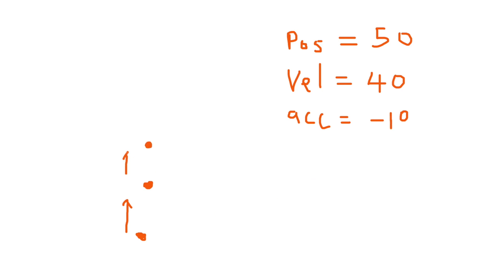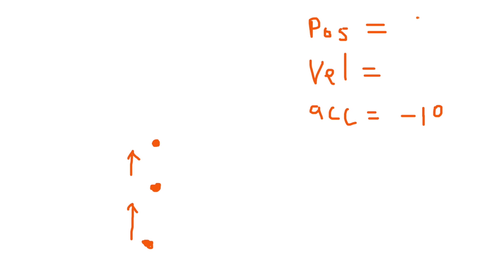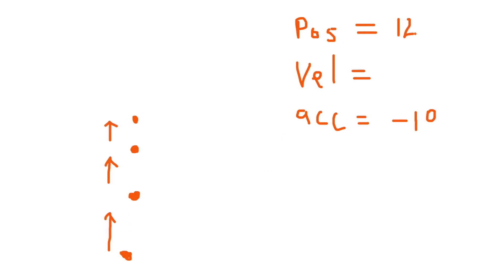Then the ball moves again, this time by 40, so position would be 90, velocity reduces down to 30, and acceleration is still minus 10. Then the next time through the draw loop, position equals 120 and velocity equals 20. We can see that the ball continues moving up each frame by a smaller and smaller amount, and eventually it's going to stop, velocity will become negative, and it will move back down towards where it started.